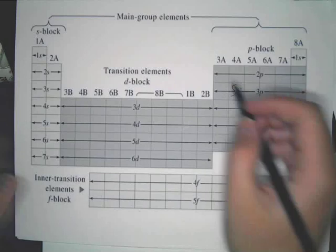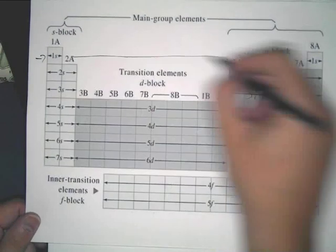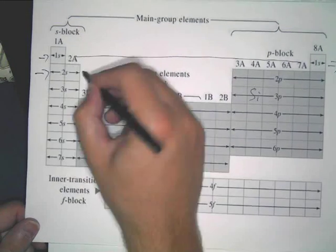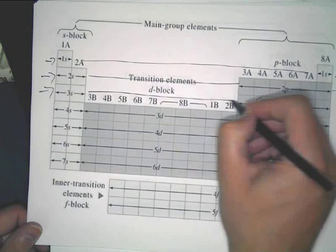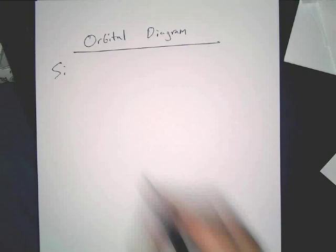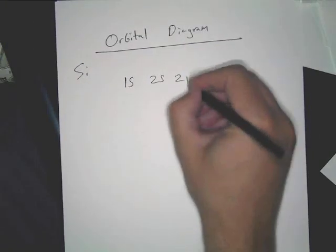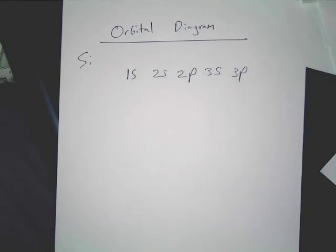Remember how we find the order. We're going to start right here and go over, then go back again, then over again — this is telling us the order. So you're going to go 1s, 2s, 2p, 3s, 3p.